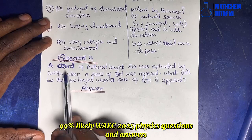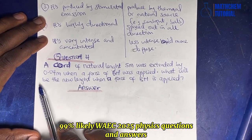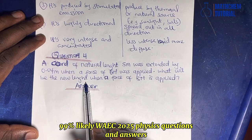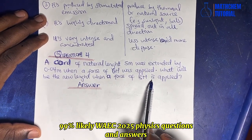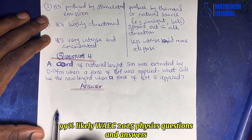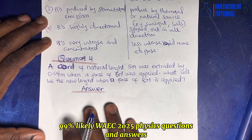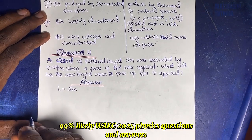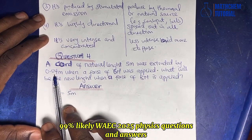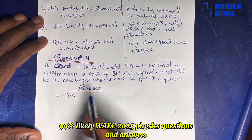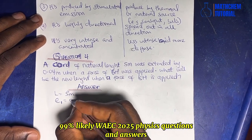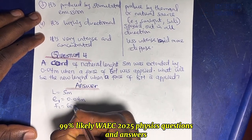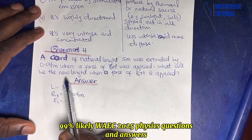Question four: a chord of natural length 5 meters was extended by 0.04 meters when a force of 6 newtons was applied. What would be the new length when a force of 8 newtons is applied? This is related to Hooke's Law. We have L = 5 m, extension e = 0.04 m, F1 = 6 N, F2 = 8 N.